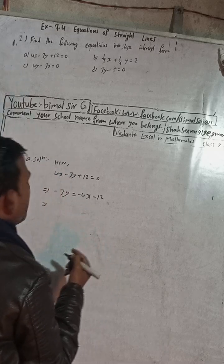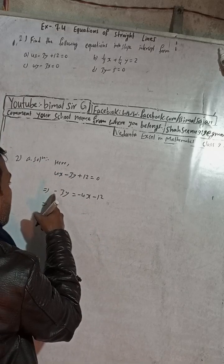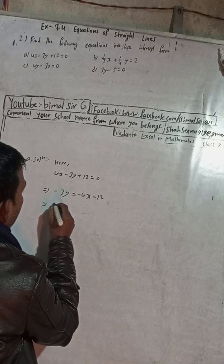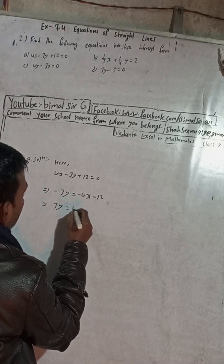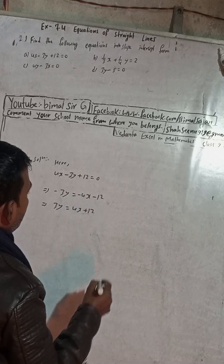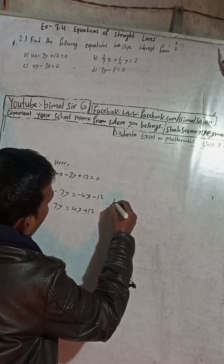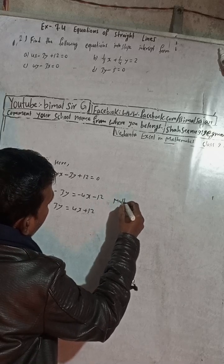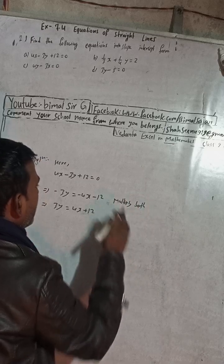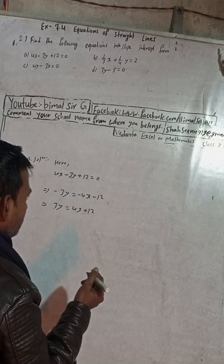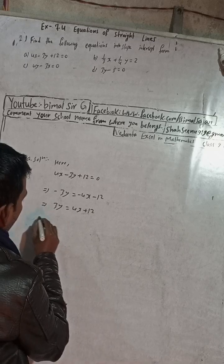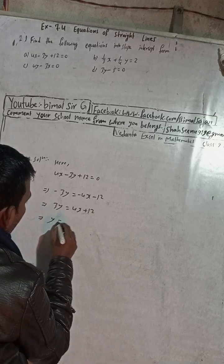Our target is to make this positive y. So what we do is change the sign. Changing sign means multiplying both sides by minus. If you multiply both sides by minus, minus will be plus, plus will be minus. You can write multiplying both sides by minus, or taking common minus.